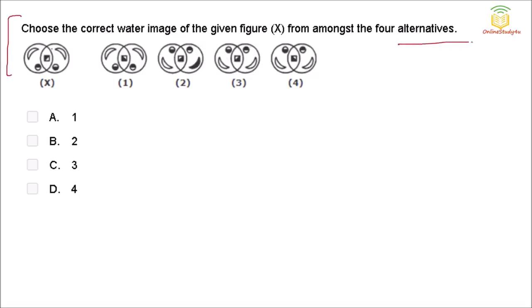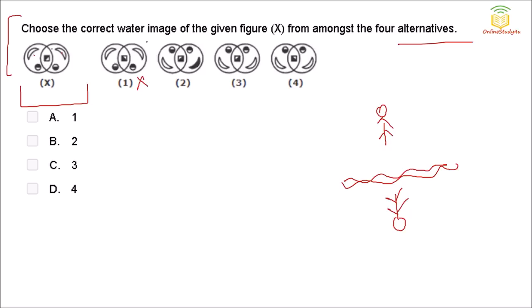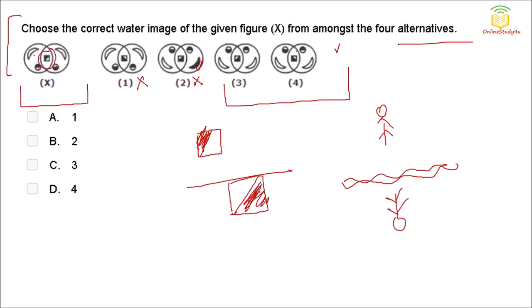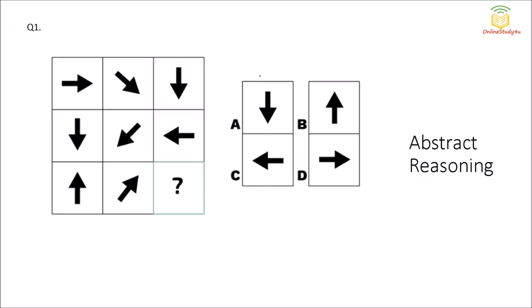Next: choose the correct water image from four alternatives. A water image means if you stand in front of water you see an inverted reflection — it appears flipped upside down. For this figure, in the water image the top portion comes down. The first option has not come down. The second is black — wrong. The third and fourth are candidates. The dark part goes up and the white person comes down. Looking carefully, option 3 is exactly inverted — so option 3 is the water image of X.